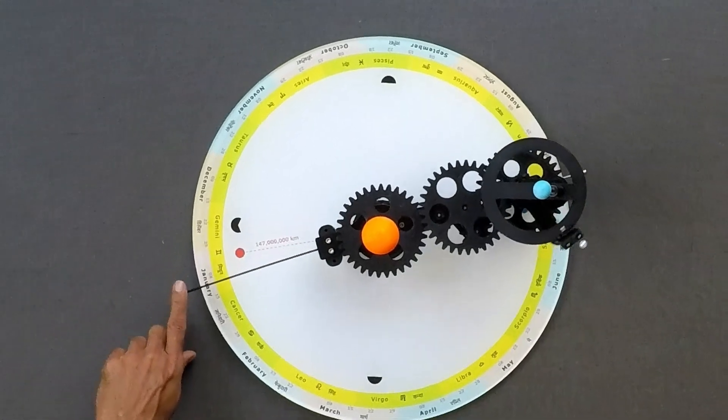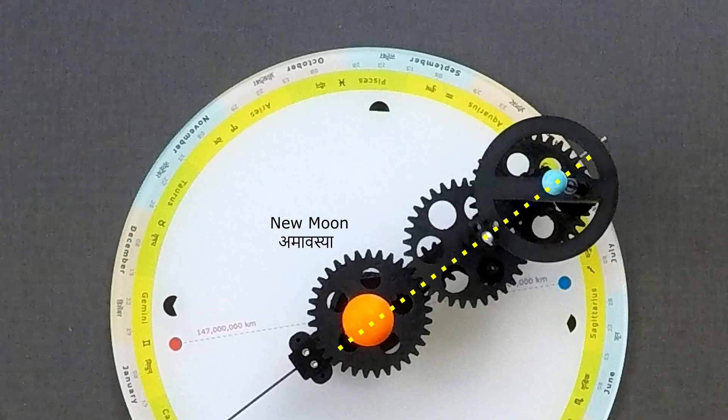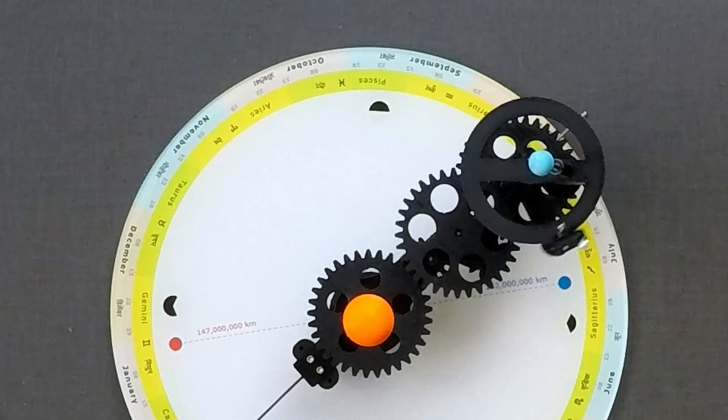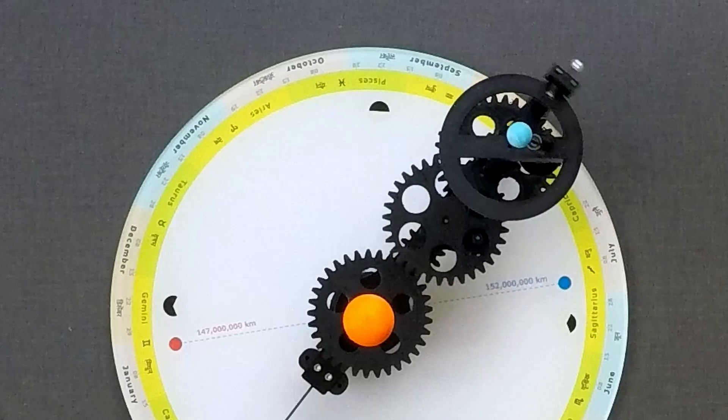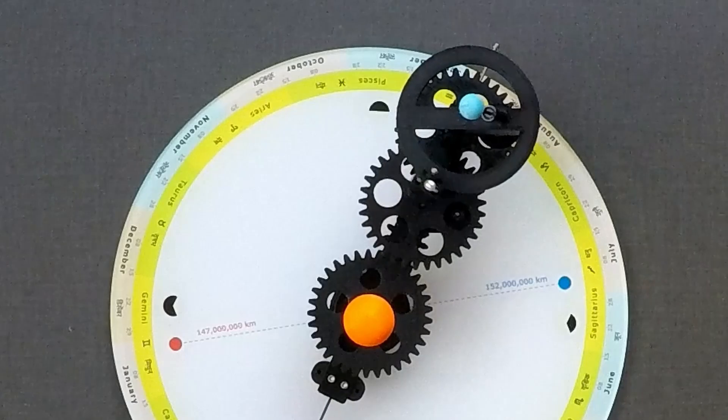When Moon is between the Earth and the Sun, it is New Moon Day, also known as Amavasya. When Earth is between the Sun and Moon, it is Full Moon Day, or Purnima.